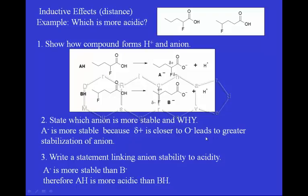The last thing we do is write a statement that links anion stability to acidity. A minus is more stable than B minus; therefore AH is more acidic than BH. Remember, AH is going to form more A minus because A minus is more stable than B minus, so we get more H+.